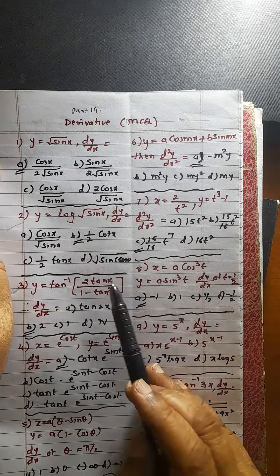This is nothing but tan of 2x. This is tan of 2x. Tan inverse of tan of 2x is 2x. So derivative will be 2.